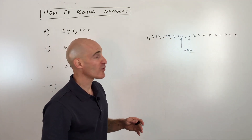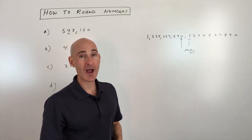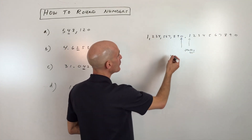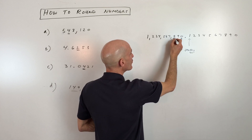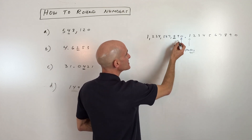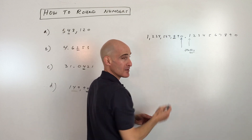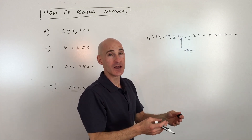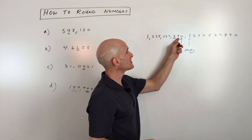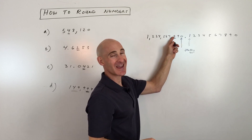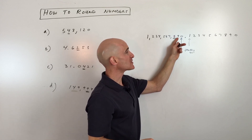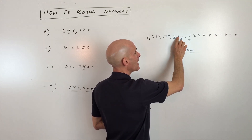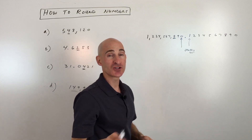Now let's talk about rounding. The key is figuring out where you are in the number. If you want to round to a specific digit, go one digit to the right — one place smaller. If that digit is five or more, we round up. If it's four or less, we round down, keeping the target digit the same, and all digits after it become zeros.